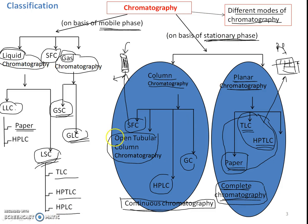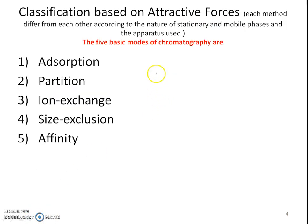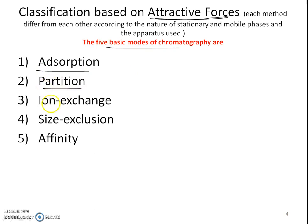The third way by which chromatographic methods are classified depends upon the attractive forces — the modes of chromatography. There are five basic modes: adsorption, partitioning, ion exchange, size exclusion, and affinity — which we will see in detail afterwards.